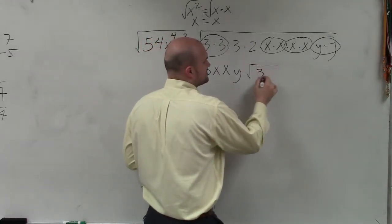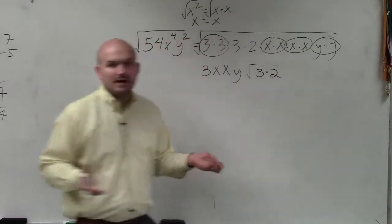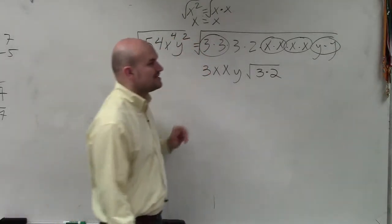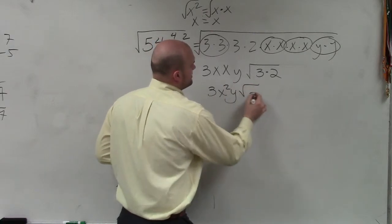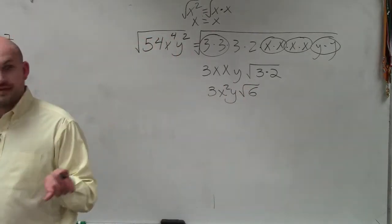So I have 3 times 2. Now I just go ahead and simplify. 3 times x times x times y is 3x squared y times the square root of 6. And that's it.